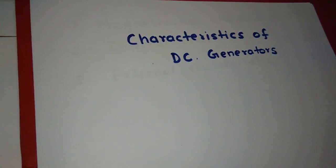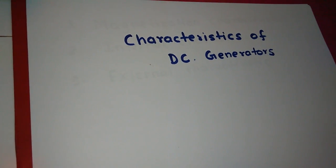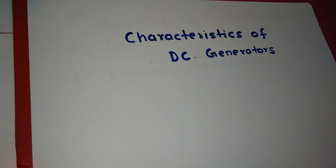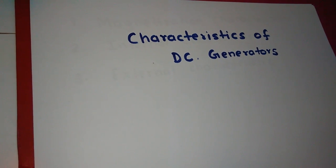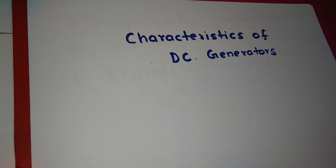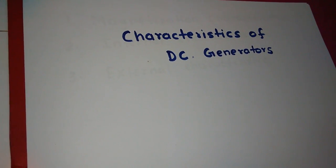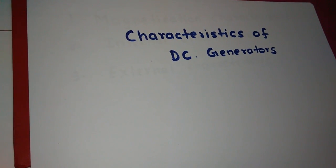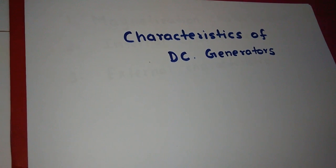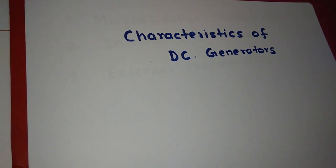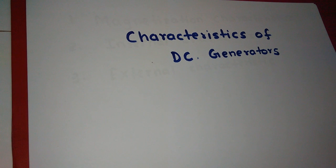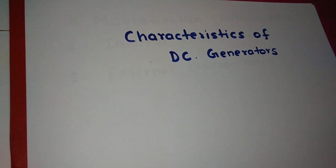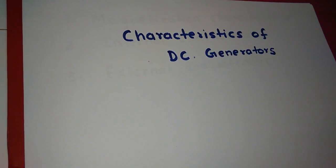Hello friends. Today we are discussing about characteristics of DC generators. At present time, bulk of electrical energy is generated in the form of alternating current. DC generators are no more used in modern power systems. For the sake of continuity, the characteristics of DC generators are briefly given here.